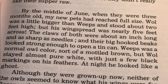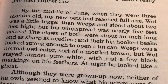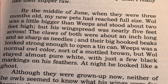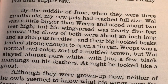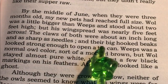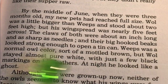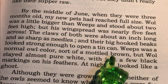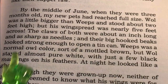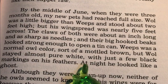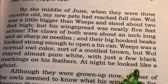By the middle of June, when they were three months old, my new pets had reached full size. Wool was a little bigger than Weeps and stood about two feet high, but his wing spread was nearly five feet across. The claws of both were about an inch long and looked as sharp as needles, and their big hooked beaks looked strong enough to open a tin can. Weeps was a normal owl color, sort of mottled brown, but Wool stayed almost pure white, with just a few black markings on his feathers. At night, he looked like a ghost.